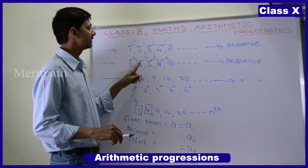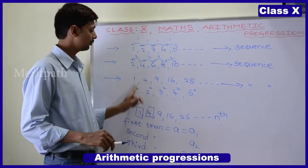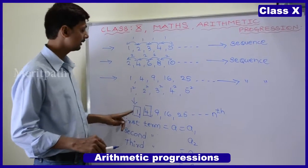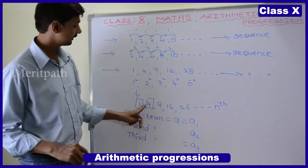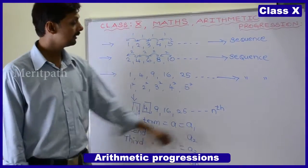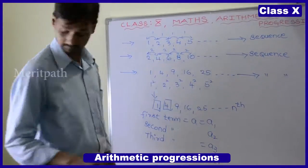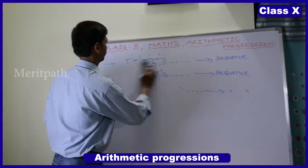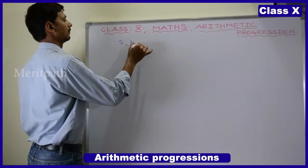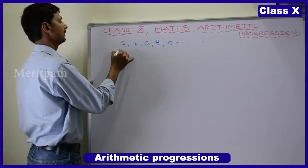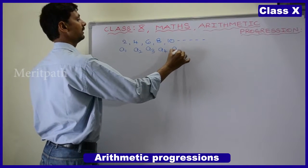In this sequence, the difference between the numbers is the same. In the first pattern the difference is the same; in the second, also the same. The third follows square numbers — 1 square, 2 square, 3 square, 4 square, 5 square. In these sequences, the first term is called a1, second term a2, third term a3, and so on. The term in the nth place is called the nth term. So: first term a1 or a, second term a2, third term a3, fourth term a4, fifth term a5, and so on.